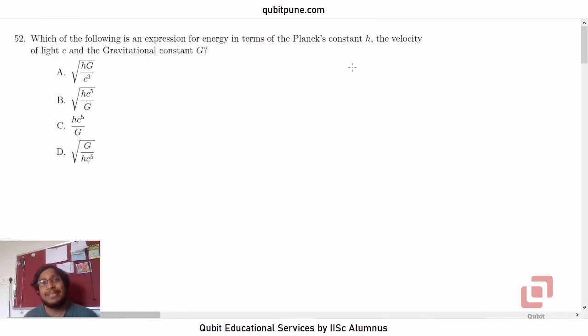Namaste, welcome back to our channel, Qubit Educational Services. In this video series, we are solving the physics MCQs from answer aptitude test 2019. We have already solved six of them and in this video, we are going to solve the next one, MCQ number seven, which in actual paper was question number 52.